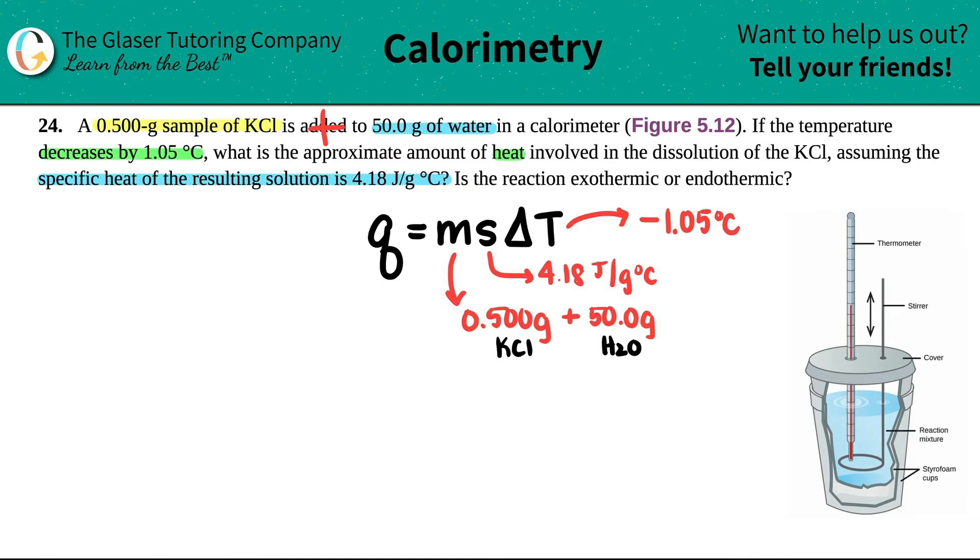It kind of makes sense. If your final temp, it's Tf minus Ti. If your final temp was lower than your initial, of course you're going to have a negative number. So that's the key thing here guys. You have to put a negative in for this.